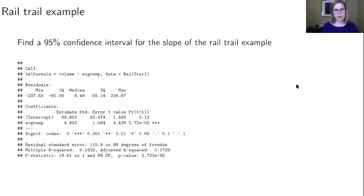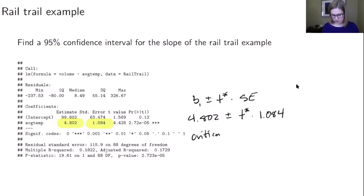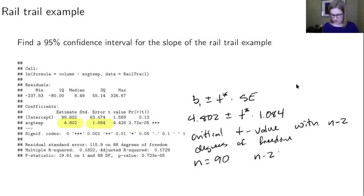We're going to find a 95% confidence interval for the slope in the rail trail example. Pulling out the numbers: B1 plus or minus t-star times SE, so B1 is 4.802 plus or minus t-star times 1.084. We need a critical t-value with n minus 2 degrees of freedom. Here n equals 90, so n minus 2 is 88. Technology also reports 88 degrees of freedom.